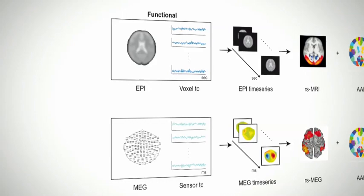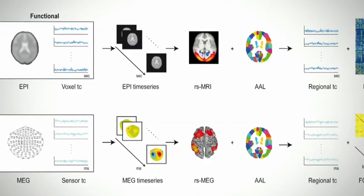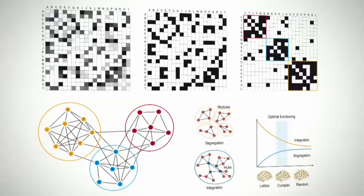FMRI and MEG time series can be combined with a parcellation to create functional connectivity, FC, which can then be represented with the FC matrix.